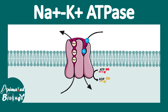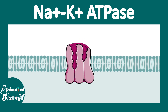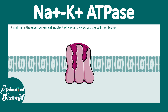In this video we'll talk about sodium potassium ATPase. Sodium potassium ATPase maintains the electrochemical gradient of sodium and potassium ions across the membrane. It is useful for maintaining cell volume, nerve impulse transmission, muscle contraction, and many more aspects of cellular physiology.